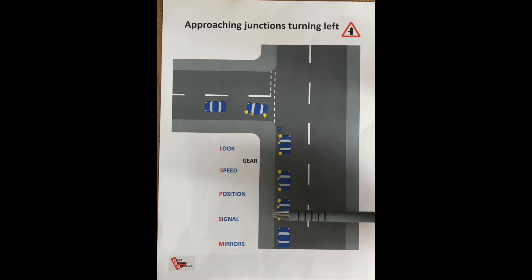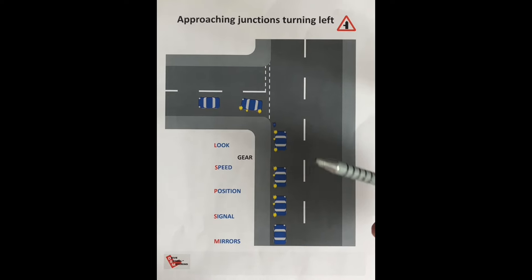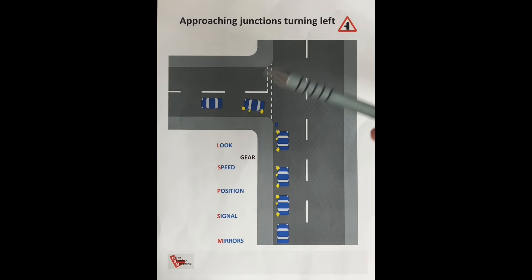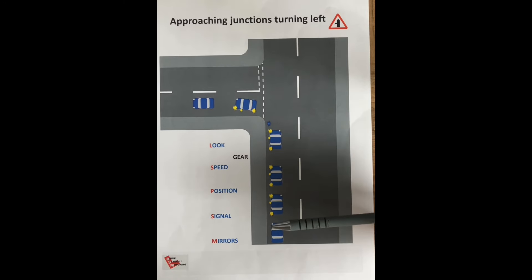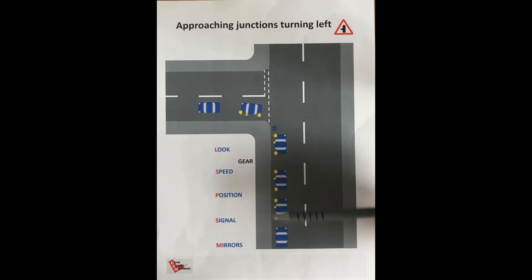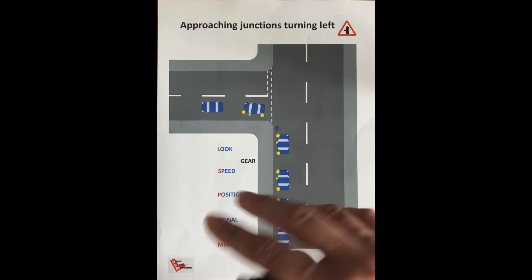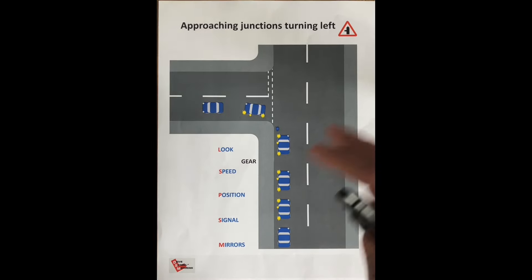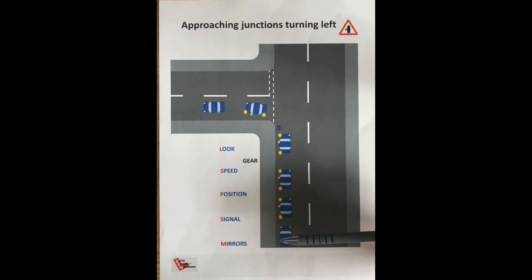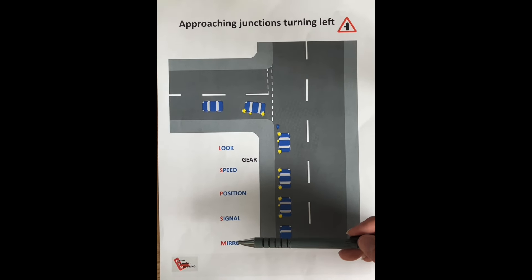The MSPSL routine is incredibly important. If students can learn this system off by heart, they're going to be a really good driver — it's that simple, because you won't miss anything. Coming up to a left turn, depending on your speed, this starts earlier if you're going faster. In a normal 20–30 mph town situation, start the process around eight to ten car lengths away, as long as there's no other junction that might make your signal look confusing.